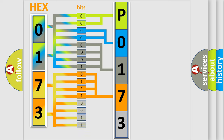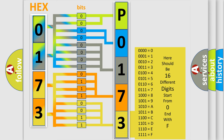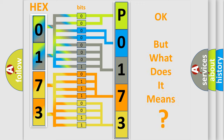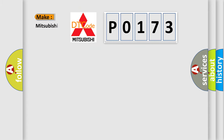A single byte conceals 256 possible combinations. We now know in what way the diagnostic tool translates the received information into a more comprehensible format. The number itself does not make sense to us if we cannot assign information about what it actually expresses. So, what does the diagnostic trouble code P0173 interpret specifically for Mitsubishi car manufacturers?